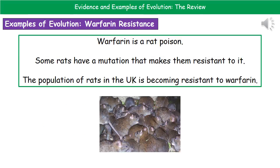The third and final example is warfarin resistance. Warfarin is a rat poison that we've used for a good few years. Some rats have a mutation that makes them resistant to it, so it doesn't kill them. If we look at the population of rats in the United Kingdom, we see an ever-increasing number that are resistant to warfarin, so the poison we've used for many years just isn't effective anymore.